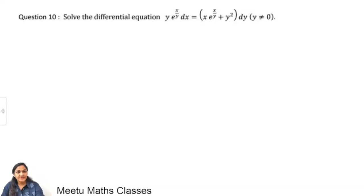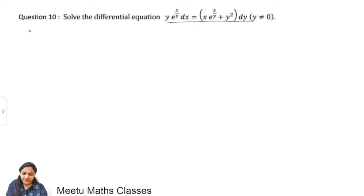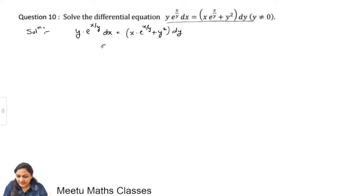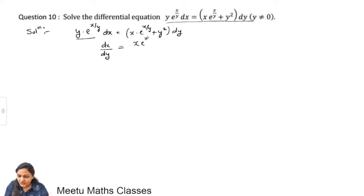The next question is question number 10: solve the differential equation y · e^(x/y) dx = (x · e^(x/y) + y²) dy. We can rearrange to find dx/dy. Since x/y appears throughout, we make the substitution x/y = v, that is x = vy.